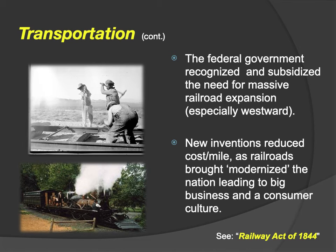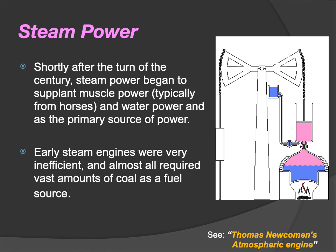The federal government recognized and subsidized the need for massive railroad expansion, especially westward. The first areas connected were places like Missouri and then across the Mississippi River into the Great Plains. Steam power — burning coal to heat water, creating pressure to turn a piston — is what powered all of these trains and boats, providing the engine power needed to get where you needed to go.